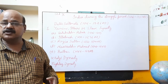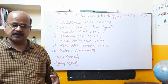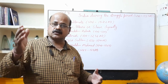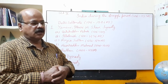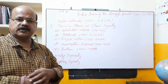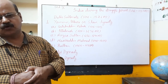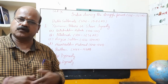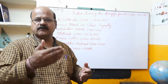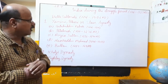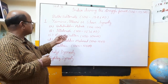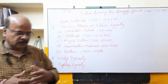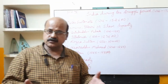Qutbuddin Aibak is remembered as a beneficent ruler of his period. In 1210 AD, he died while playing Chaugan, which is also known as Polo. After that, Iltutmish became the Sultan of the Slave dynasty in 1210 AD.